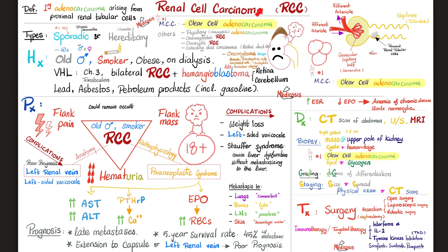The typical patient of renal cell carcinoma is usually older — in his 60s. Risk factors include old age, being male (it's twice as likely in males), smoking cigarettes, being obese, being on dialysis for a long time, and being exposed to lead, asbestos, or petroleum products including gasoline.